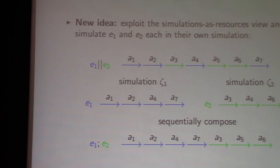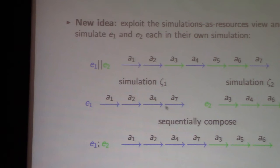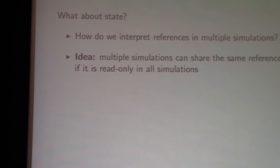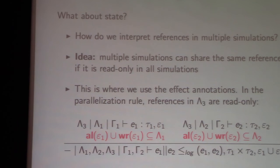Why is this sound? We still need to use the effect annotations. When we do a reduction step a4, we need to know we can do that step in this simulation, but the state here doesn't necessarily match because we haven't done the a3 step yet. We need to rely on the effect annotations to ensure we can still do the a4 step. The idea is to allow simulations to share state under certain conditions — in our type and effect system the restrictions are quite severe: they can only share state if it's read-only. But this idea of multiple simulations would allow generalization.